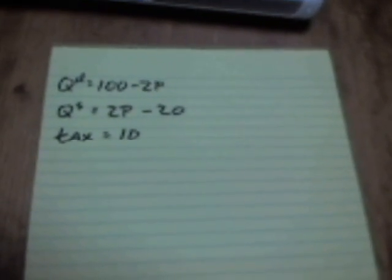Alright, so here's the situation. Quantity of demand is 100 minus 2 times the price consumers pay. Quantity of supply is 2 times the price producers get to keep, minus 20, and the tax is 10.